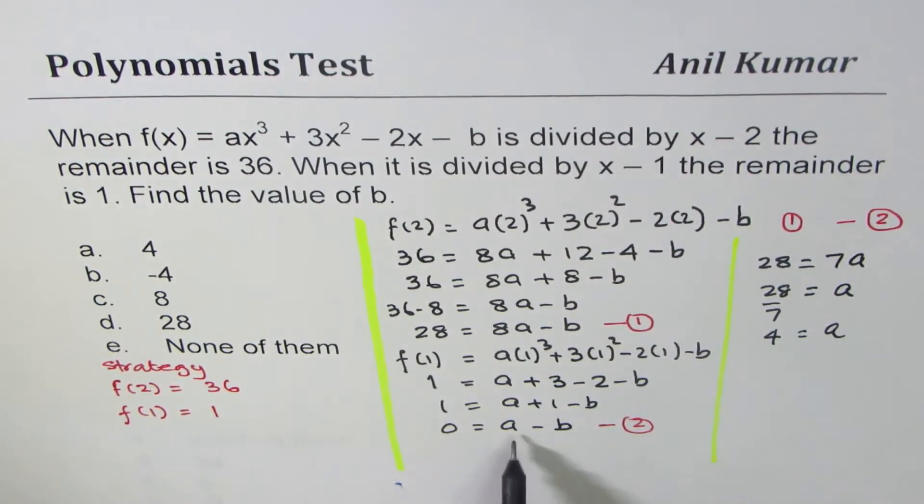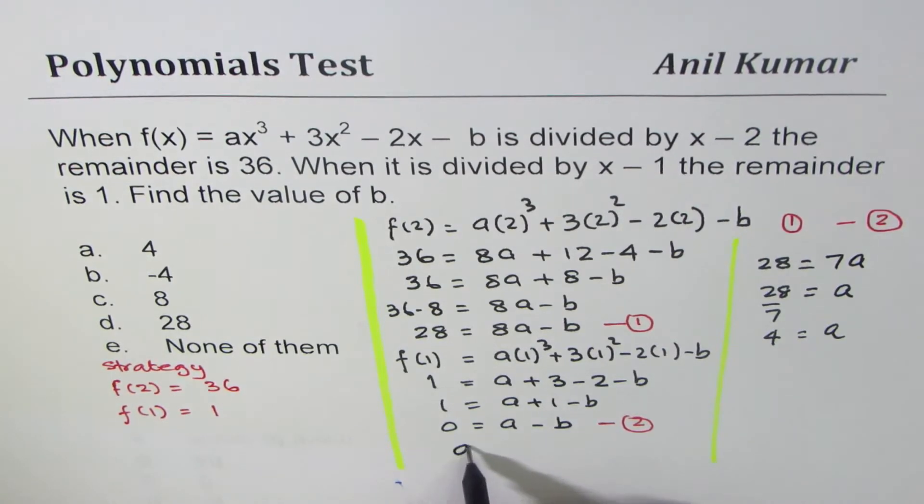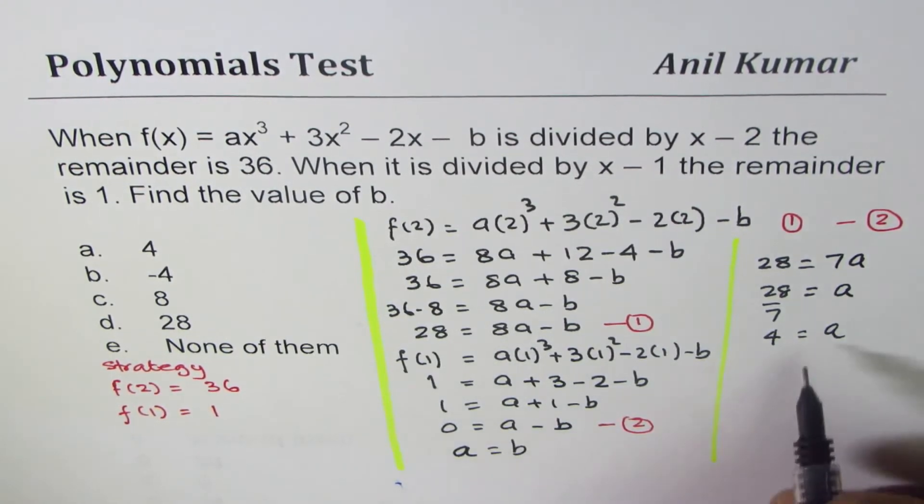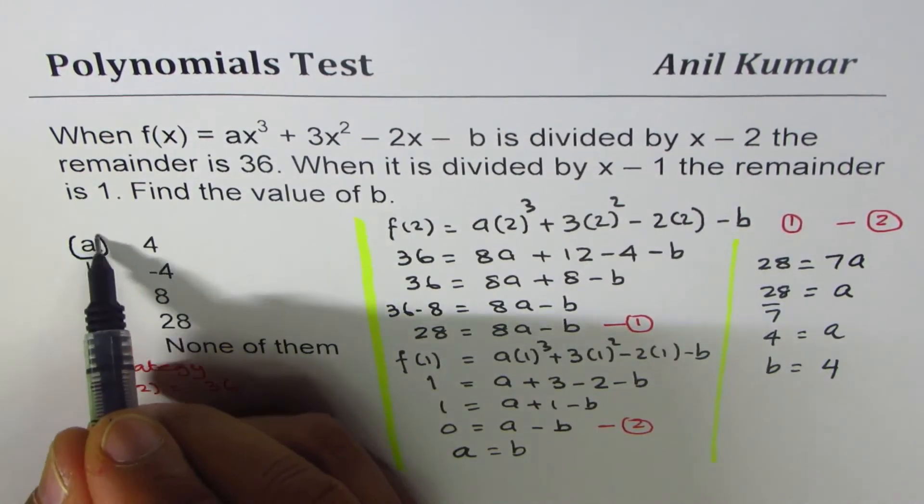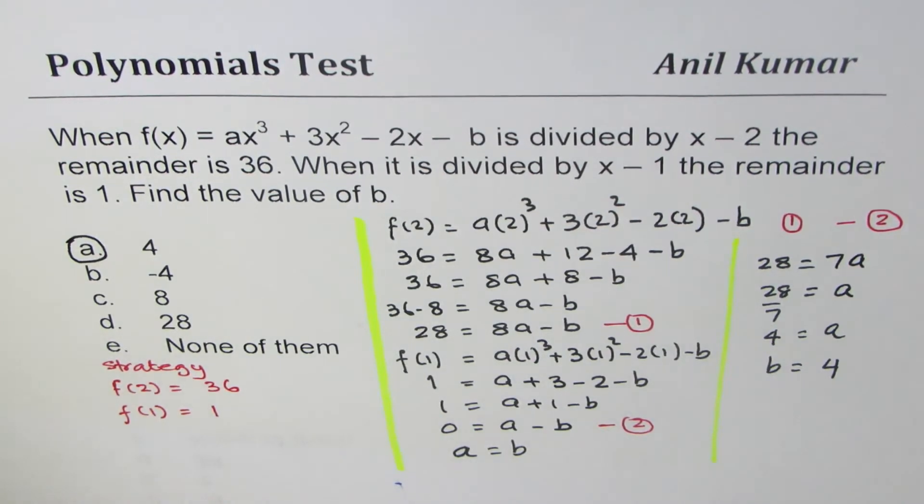From the second equation, we can write that a = b. Therefore, we know what b is: b = 4. So choice A is the right answer for the given question.